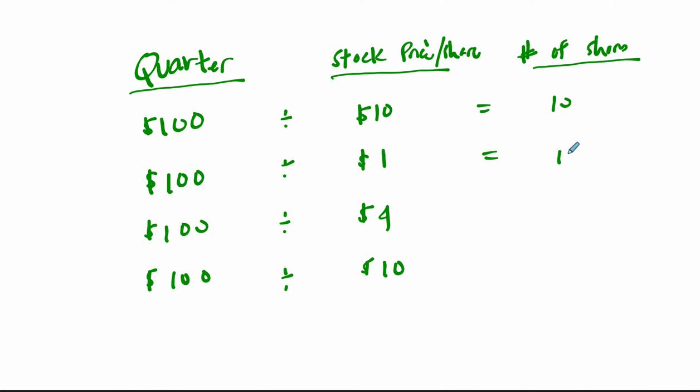The next quarter, you're able to buy 25. And finally, you're able to buy 10 at the end. So there's a lot of fluctuation here. In total, you're able to buy 145 shares.